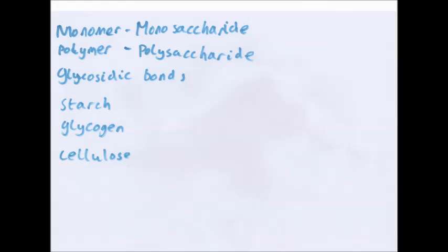The monomer is monosaccharides. The polymer is polysaccharides. And you have disaccharides, which is just two. These form glycosidic bonds. They can be 1,4 or 1,6. And the three examples. Starch found in plants. Glycogen found in animals. Both of them are for storage. And cellulose found in the structural unit in plants.